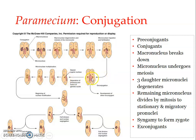Once each migratory pronucleus reaches the other conjugate, the two haploid pronuclei — one red and one yellow — fuse together to form a single diploid nucleus. Since it results from the fusion of two pronuclei from two different individuals, it is considered to be the zygote nucleus. The fusion of the two haploid nuclei from two different individuals is a process known as amphimixis.